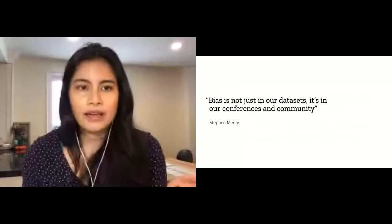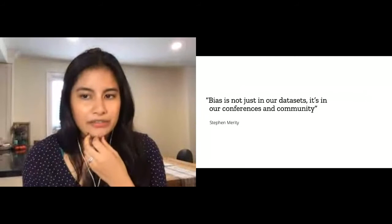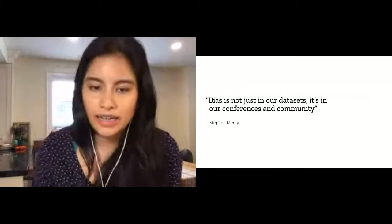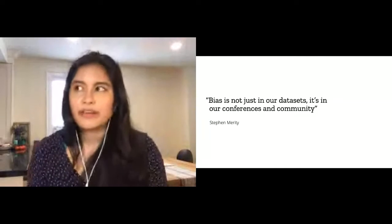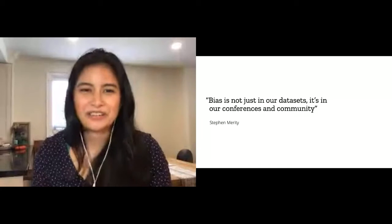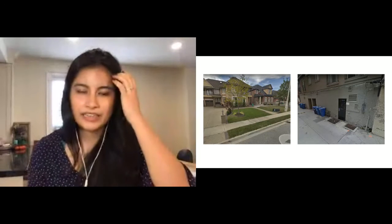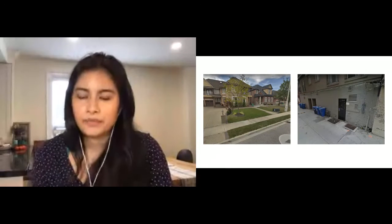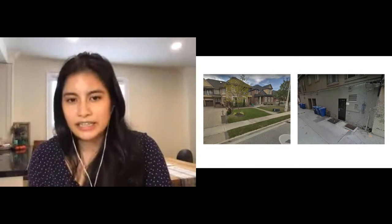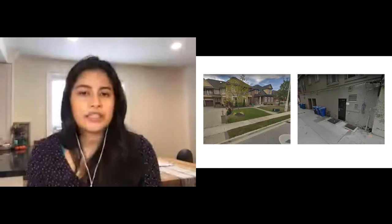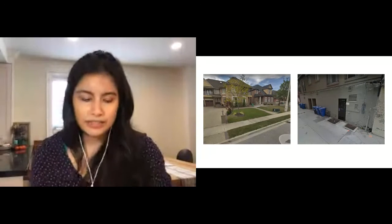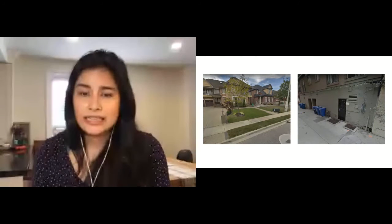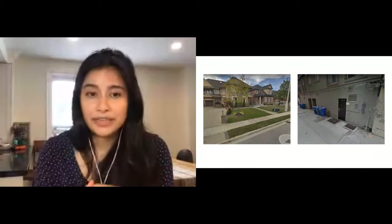Those are some examples of how algorithms or code really affects diversity in the real world. But there's this great quote from Steven Merity, a machine learning researcher. In 2017 he said: Bias is not just in our datasets, it's in our conferences and community. One of my favorite anecdotes around why this is important is actually a story told by Cathy Fam. She's a senior fellow with Mozilla and runs the Responsible Computer Science Challenge. She runs this weekly group that's very interdisciplinary—they have people from CS, law, history, race and gender studies.